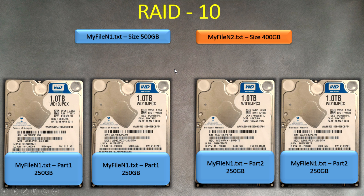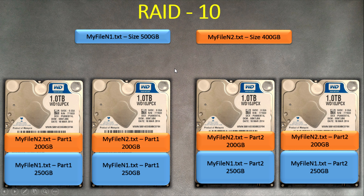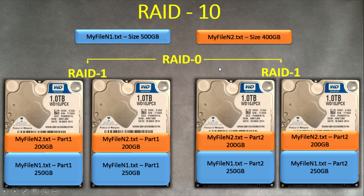Now let's write the second file — it works exactly the same way. It's divided into two parts: one part written here with mirroring to another drive, and the second part written here with its mirror created. So as you can see, this is RAID 1 mirroring on each pair, and what ties it all together is RAID 0 — striping — which divides the files into two parts across the pairs.